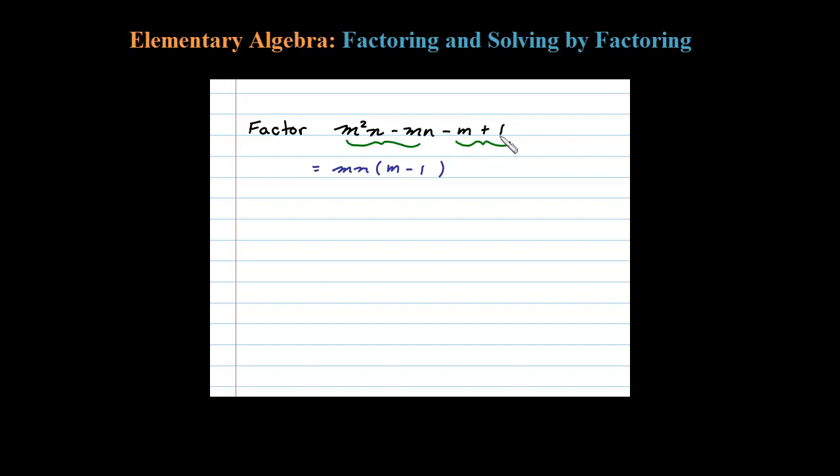Now the second two terms, do they have anything in common? Well, in this case there's always a factor of 1 in common. In fact, I'm going to use negative 1. If I factor out a negative 1 here, I'll be left with M minus 1. Now just double check that: negative 1 times M is negative M, negative 1 times negative 1 is positive 1.